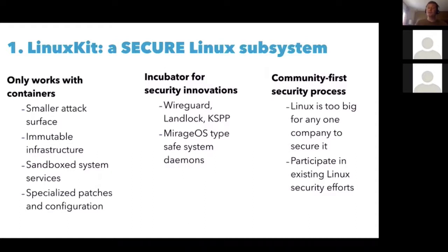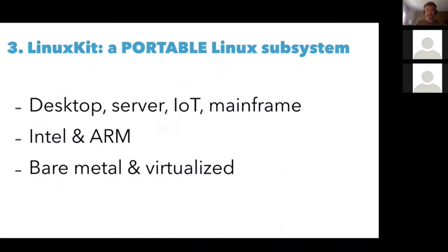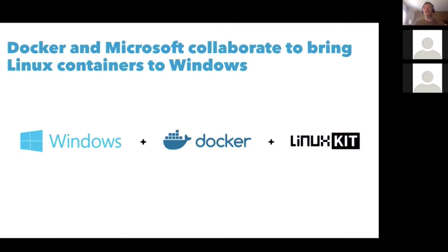LinuxKit is lean — minimal size is around 35 megabytes for an image, with minimal boot time (images in our editions are around 100 megs). All system services are containers and you can remove and add things. And it's portable — it needs to run on desktop, servers, IoT, mainframe, Intel and ARM, bare metal and virtualized. At DockerCon we showed a really cool sample use case: Microsoft decided to add Linux containers support natively into Windows through Hyper-V, and they did that with Docker and LinuxKit. John Gossman from Microsoft gave a demo of running a container using Docker and LinuxKit on Windows.